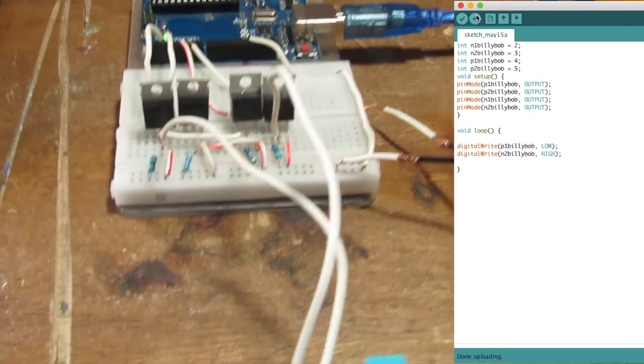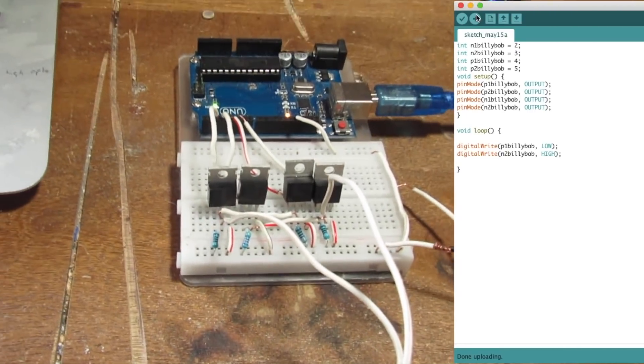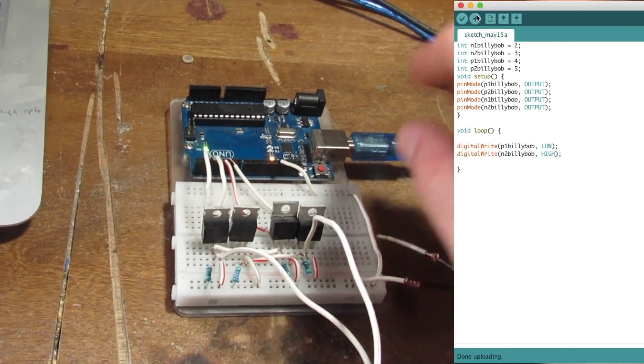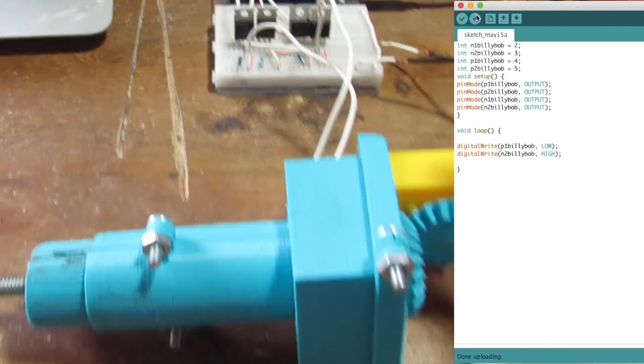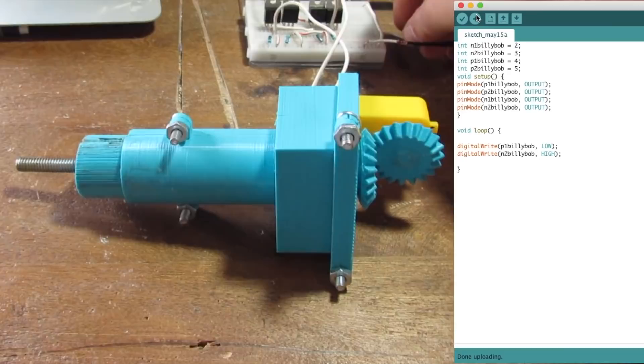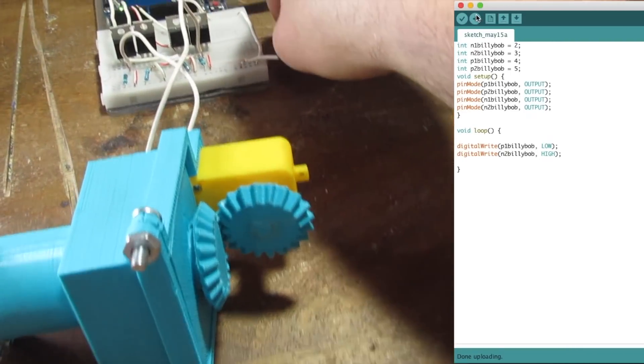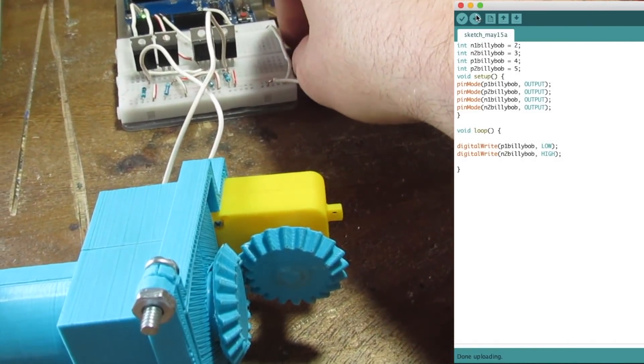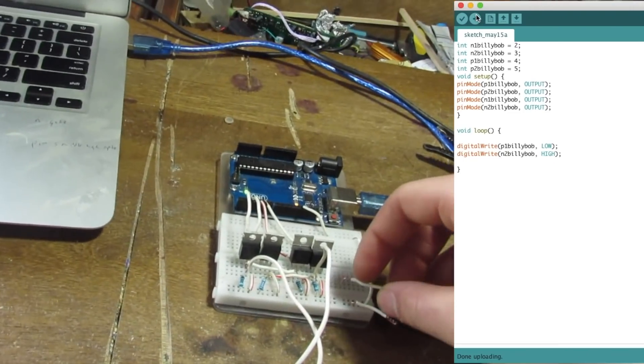Okay so I had to change some transistors around because of some structural issues with my breadboard, but it's the same thing. So here I have the linear actuator. I'm going to do P1 and N2 first, so that will screw this thing counterclockwise.